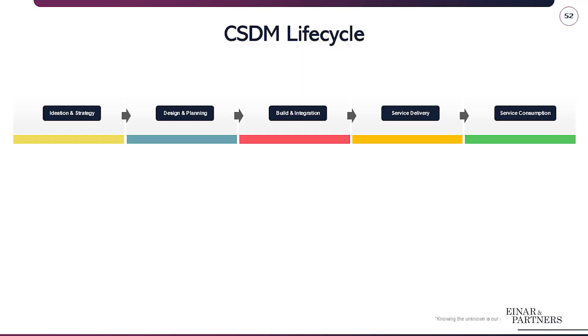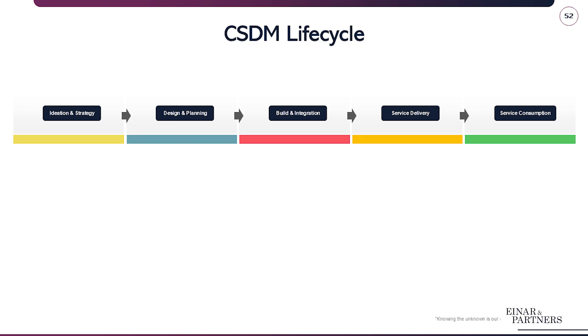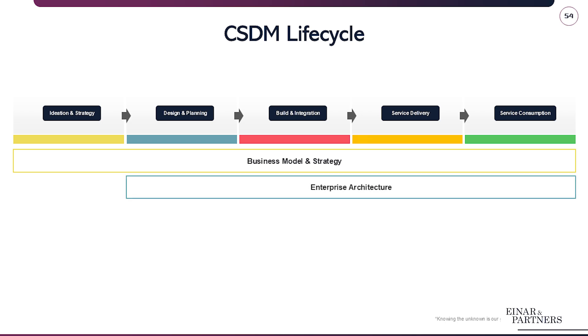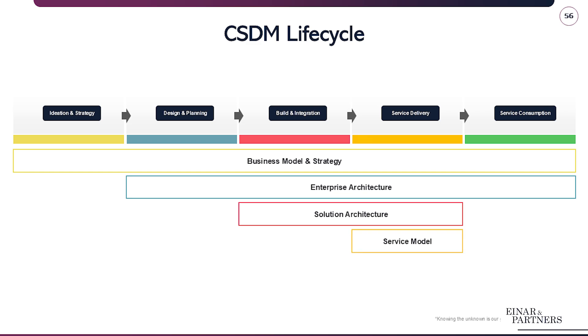To tie it all together, we look at the final update in CSDM5 — the lifecycle. Previously a bit fuzzy and unclear, the lifecycle has now received major clarifications. It starts at the very beginning of ideation and strategy and reaches all the way to service consumption and how the product is consumed within the enterprise. It covers not just IT but the entire business model — including ideation and strategy, design and planning with enterprise architecture, build and integration where solution architecture starts, service delivery, and finally service consumption relating to sales and support models.